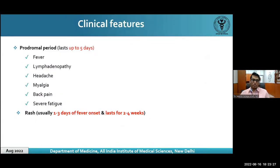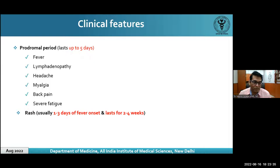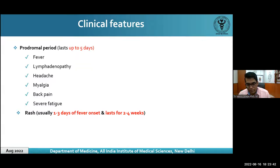There are two clinical phases. The prodromal period lasts up to five days with fever, lymphadenopathy, headache, myalgia, back pain, and severe fatigue — difficult to differentiate from many other infections, particularly during this time in India. The rash occurs one to three days after fever onset and may last two to four weeks.